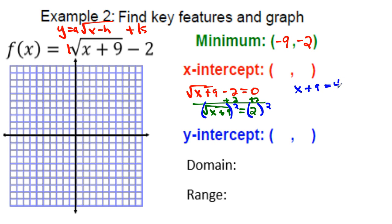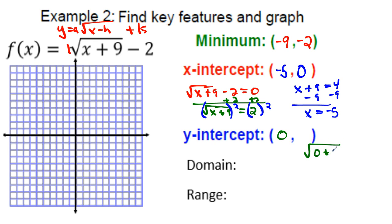Square both sides: x + 9 = 4. Subtract 9: x = −5. So the x-intercept is (−5, 0). For the y-intercept, plug in x = 0: √(0 + 9) − 2 = √9 − 2 = 3 − 2 = 1. So the y-intercept is (0, 1).